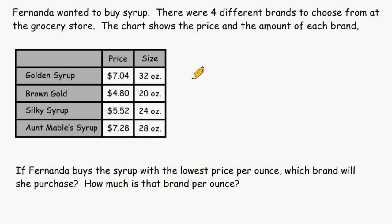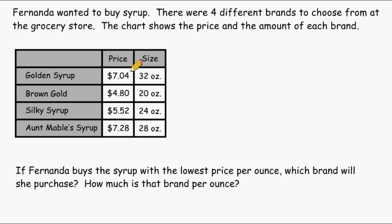This is Mr. Masonette and we have a word problem here that we have to read so we can determine what approach we should use in solving this problem. The problem reads that Fernanda wanted to buy syrup — there were four different brands to choose from at the grocery store. The chart shows the price and the amount of each brand. If Fernanda buys the syrup with the lowest price per ounce, which brand will she purchase? To do this, we have to take the price of each brand and divide it by the number of ounces.